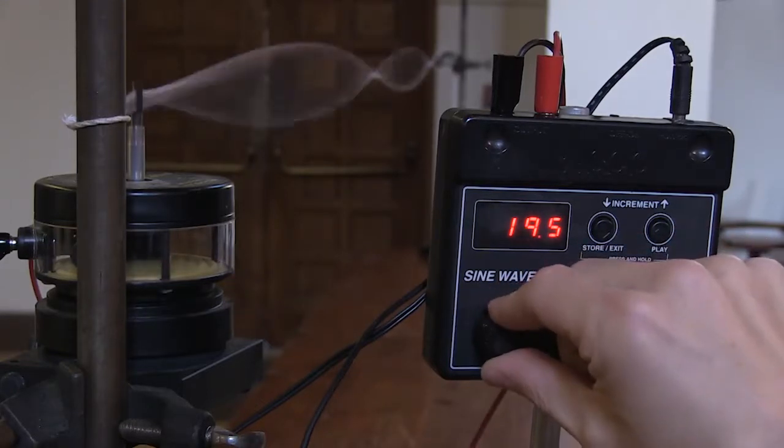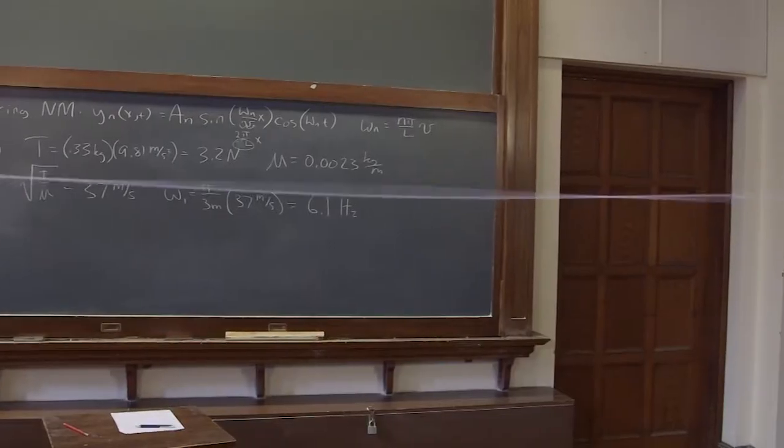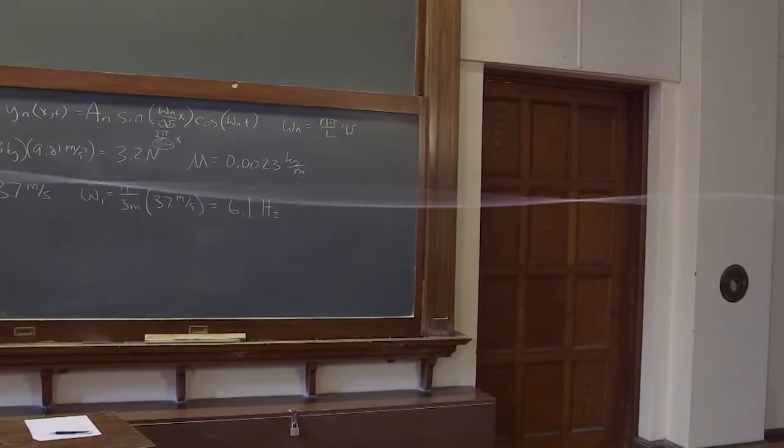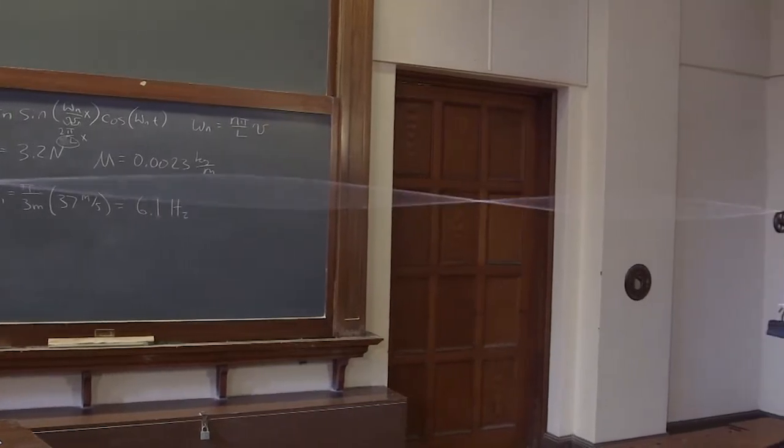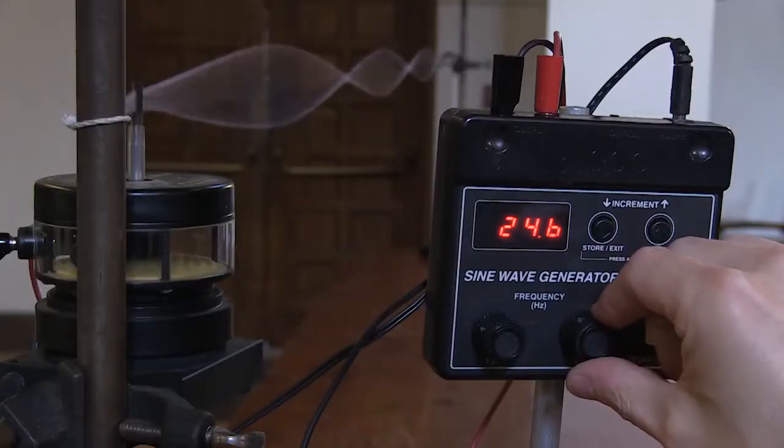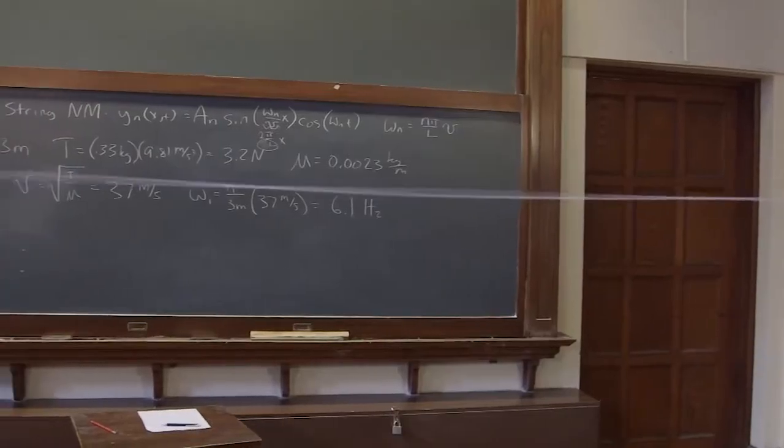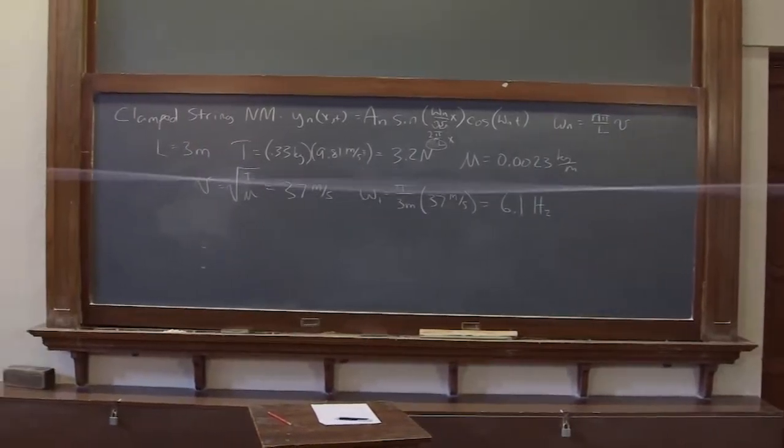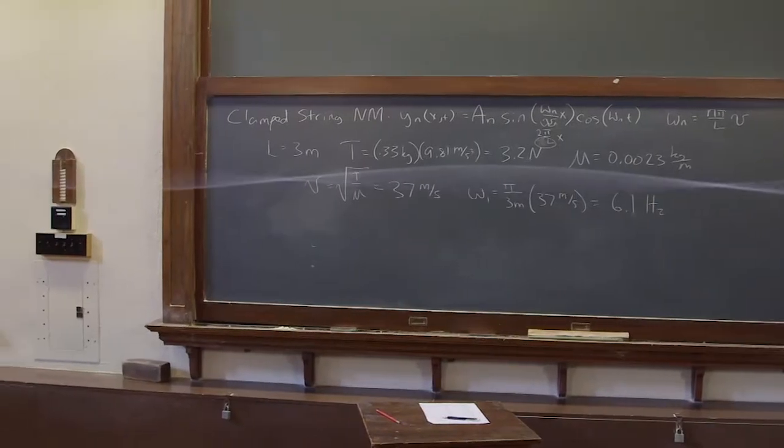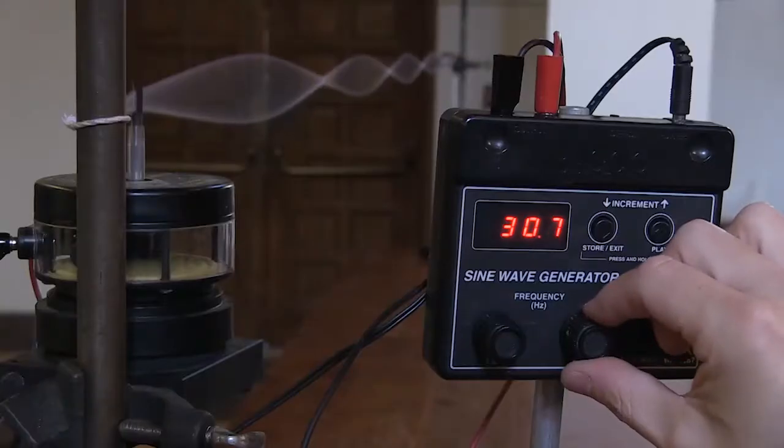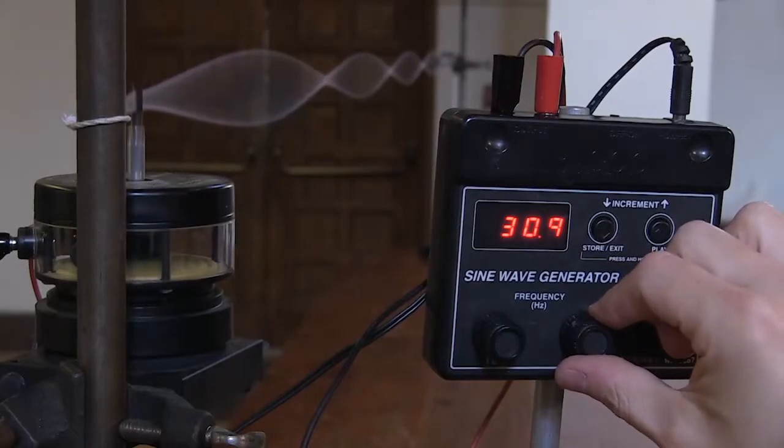24 is around 24.6, that's n equals 4, and 30, n equals 5, looks like 30.9.